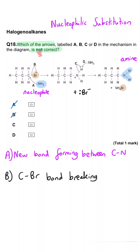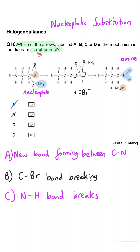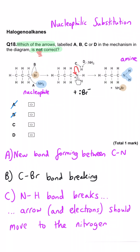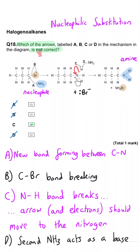Arrow C shows the bond between the nitrogen and the hydrogen breaking. It does break, but the electrons are going in the wrong direction — they don't go to this hydrogen, they should go to the nitrogen. So C is the incorrect curly arrow.